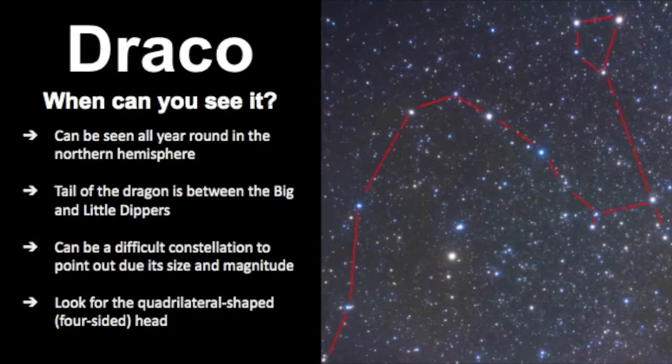So when can you find it and how can you find it? It's a constellation that can be seen all year round in the northern hemisphere, which classifies it as a circumpolar constellation. The way I find it is to look for the Big and Little Dippers and then know that the tail of the dragon goes in between the two dippers. This can be a difficult constellation to find because it's just a really large constellation and the magnitude of the stars are fairly faint.